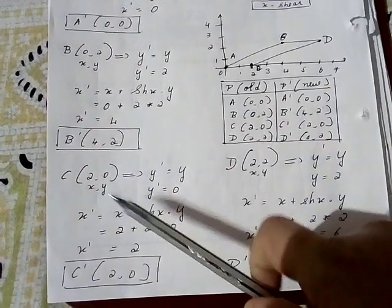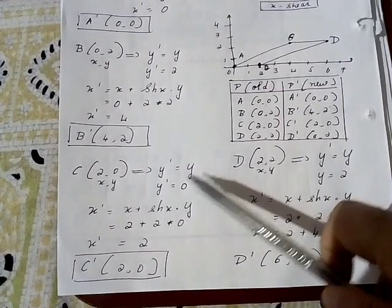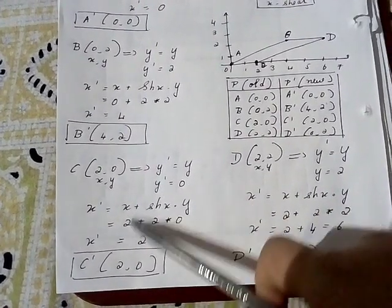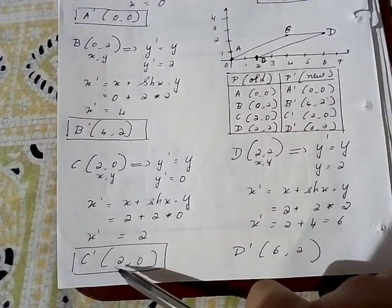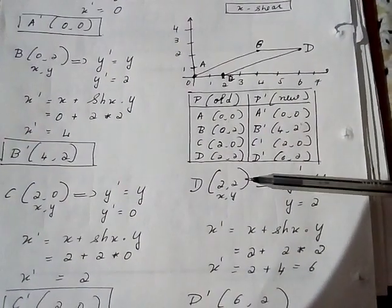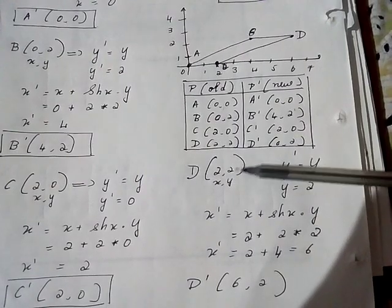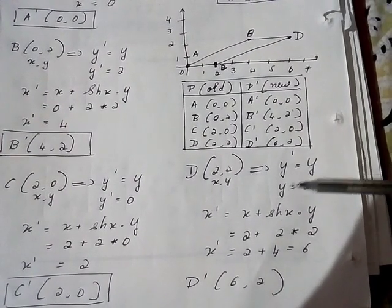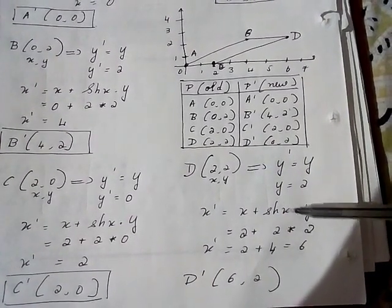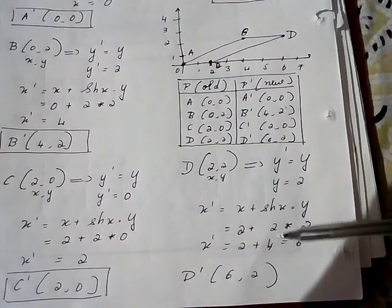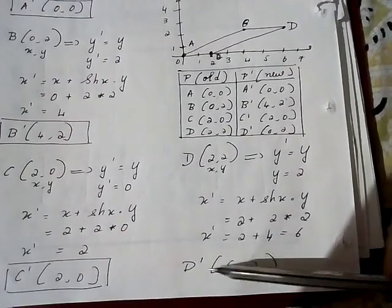For point C(2,0): x = 2, y = 0. y-dash = 0, x-dash = 2 + 2 × 0 = 2. So C-dash is (2,0). For point D(2,2): x = 2, y = 2. y-dash = 2. x-dash = 2 + 2 × 2 = 6. So D-dash is (6,2).